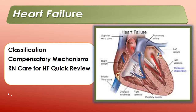Heart failure is also classified using guidelines from the American College of Cardiology and the American Heart Association, as well as the New York Heart Association's functional classification system. We also want to note the compensatory mechanisms occurring in heart failure. When cardiac output is insufficient to meet the body's demands, compensatory mechanisms include sympathetic nervous system stimulation, renin-angiotensin system activation, chemical responses, and myocardial hypertrophy. Review these in your textbook to ensure you understand what they mean.